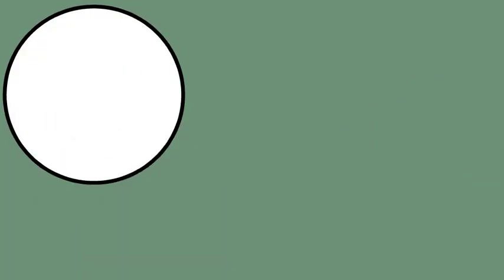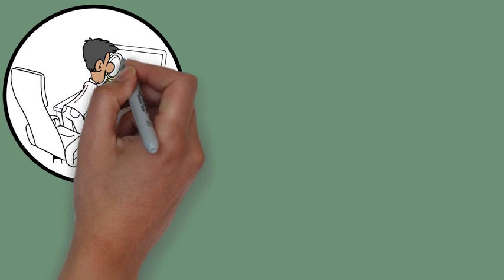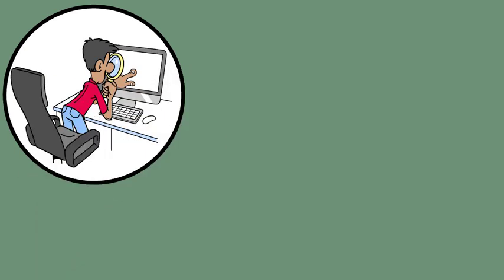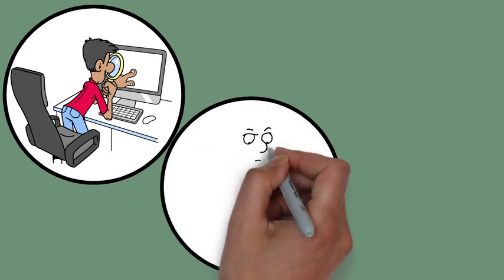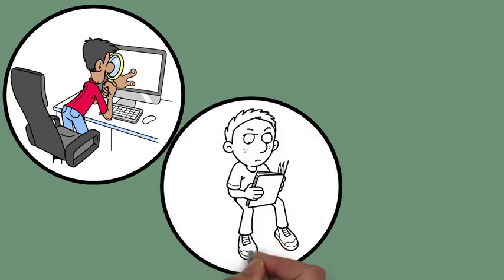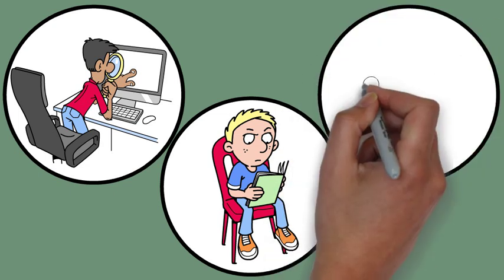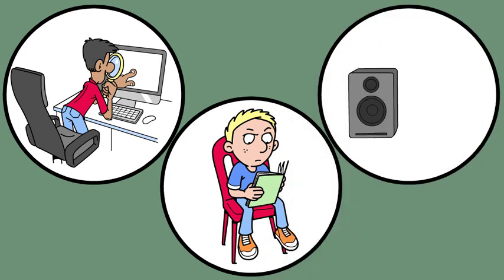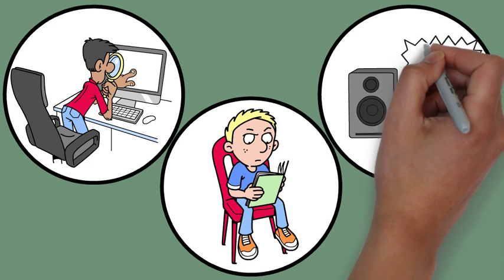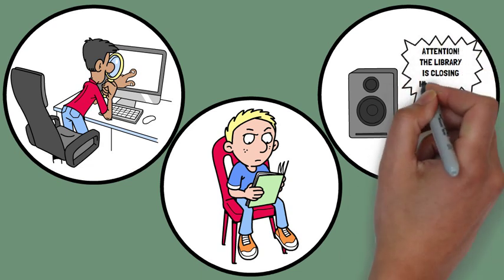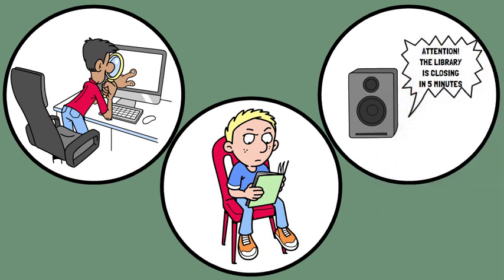Treisman's theory has practical applications for understanding how we manage attention in real life. It helps explain why we can sometimes pick up on significant or surprising information even when we are not actively trying to listen for it. For instance, while studying in a library absorbed in your textbook, if an announcement is made about an emergency, the attenuator helps you notice it even though you weren't specifically listening for announcements.